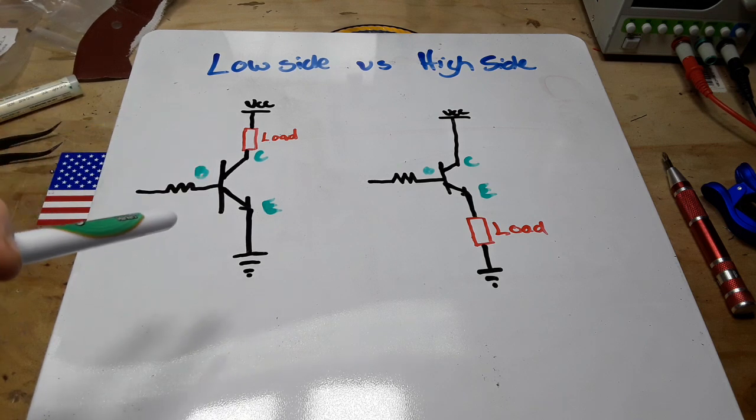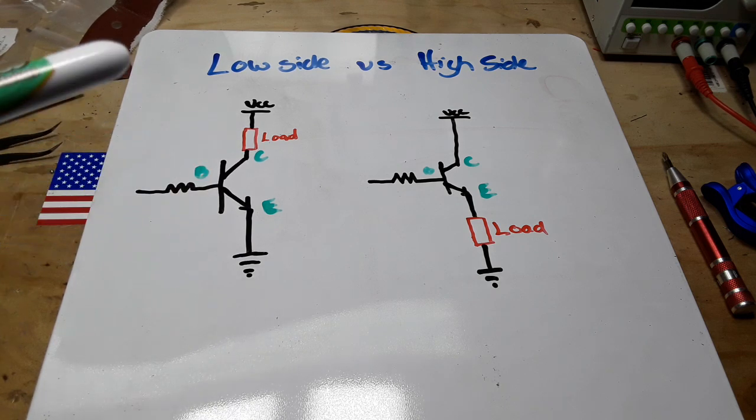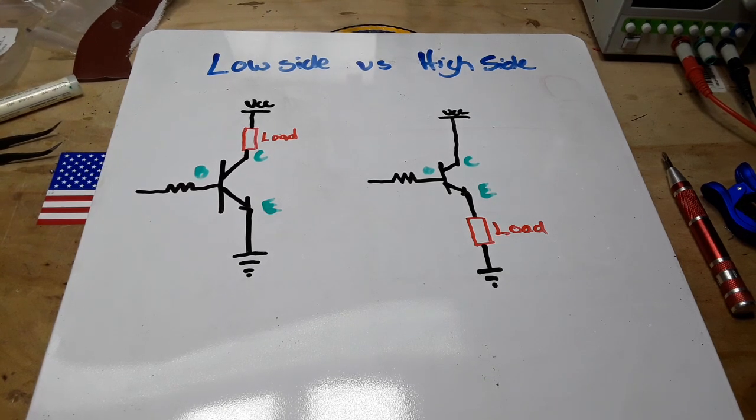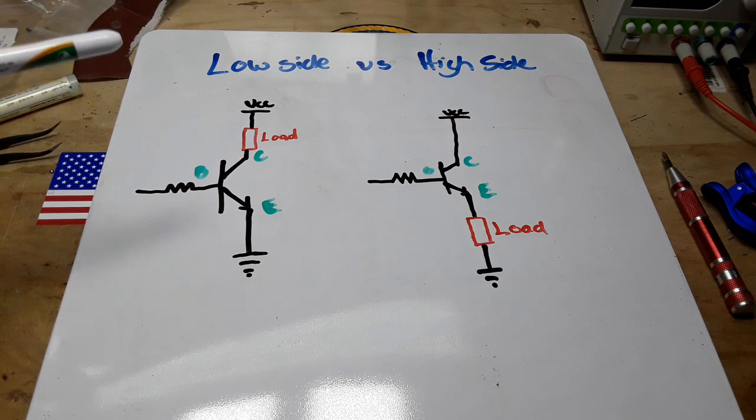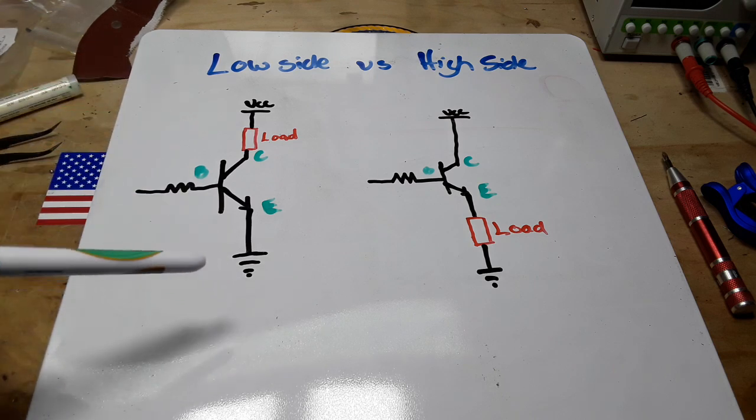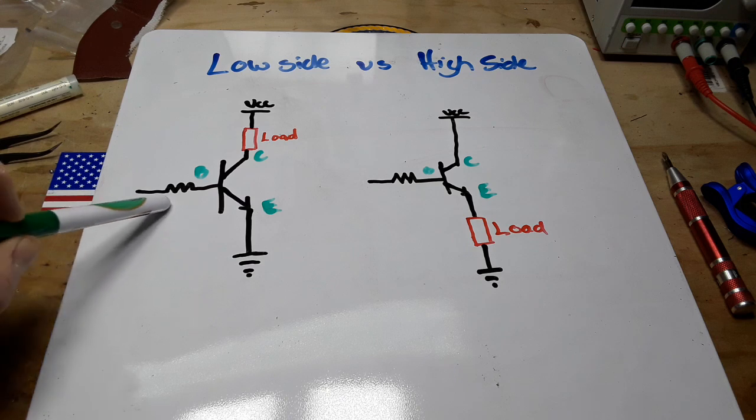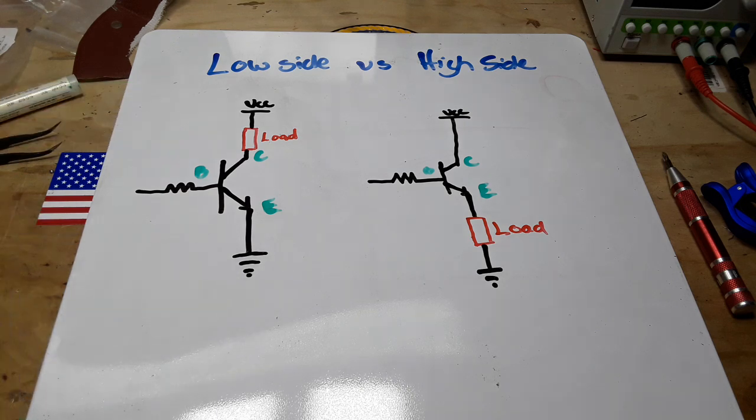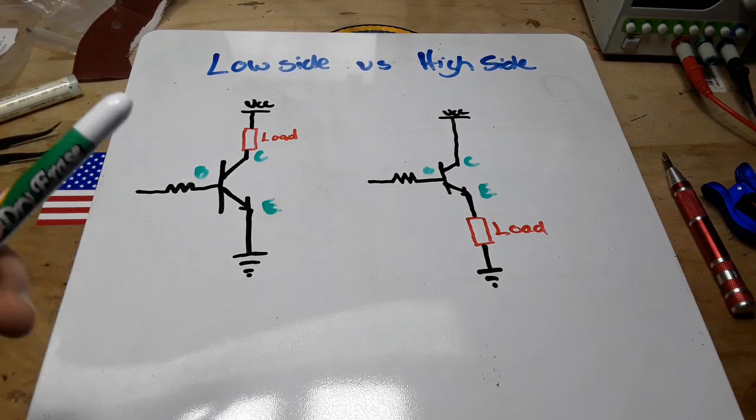And while we are talking about BJTs here in this example, this also works for N channel MOSFETs pretty much the same way. And since we're using the transistor as a switch and not as an amplifier, we want it to operate in saturation mode which means we need enough current coming into the base to open or operate the transistor fully.